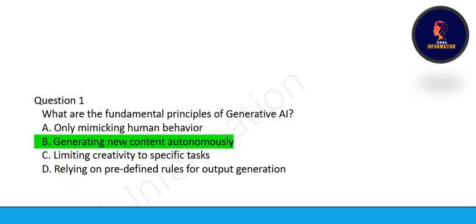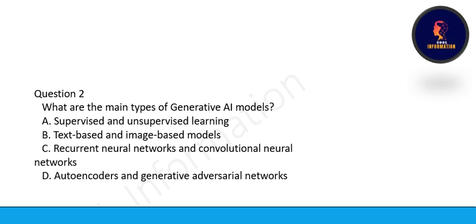Next question is, what are the main types of generative AI models? The main type of generative AI models is auto-encoders and generative adversarial network. Option D is correct.